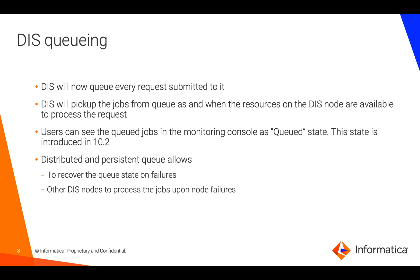DIS queuing is one example of the stability and robustness improvements in 10.2.2. The queuing existed since 10.2.0, but the new distributed and persistent queue not only allows queuing of job requests from clients and automatically processing them across various nodes of a DIS grid in a parallel fashion — it also persists the queue so that if one node goes down, other nodes can pick up the requests, and when the node comes back up it can seamlessly continue taking additional requests from the queue.